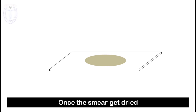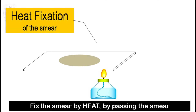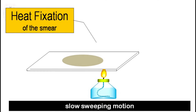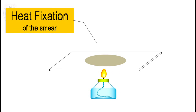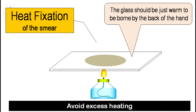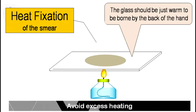Once the smear is dried, fix the smear by heat by passing it through the top portion of the flame two to three times with a slow sweeping motion. This is called heat fixation of the smear. Never heat the smear side; avoid excess heating. The glass should be just warm enough to be borne by the back of the hand.